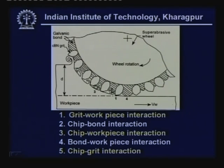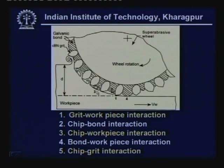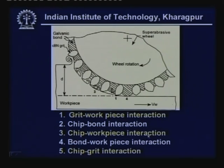Further to this, there is chip-bond interaction, where the chip rubs over the bond material—the cementing agent holding the grit. Third, because the chip can be a pretty long chip and space is limited, it folds back and starts rubbing over the workpiece, which is called chip-workpiece interaction.